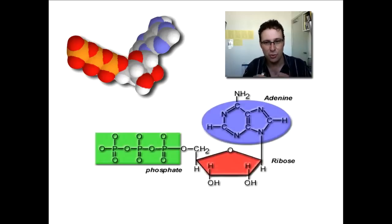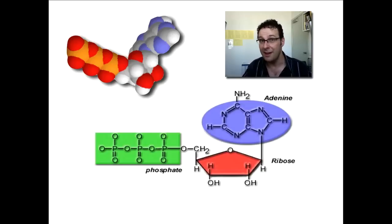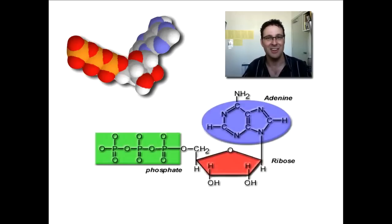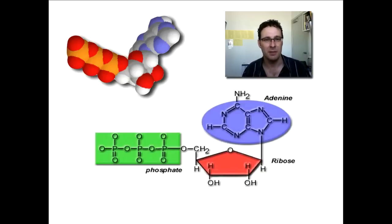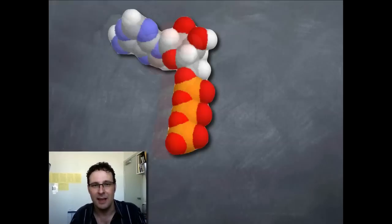Also, the sugar in ATP is ribose, just like in messenger RNA. If you think about a nucleotide, each one has a sugar, a phosphate, and a nitrogen-containing base. Look at ATP — it has a sugar, a triphosphate, and a nitrogen-containing base, because ATP is a nucleotide. A lot of people don't realise that. Usually we draw it as a molecular model, and let's have a closer look at ATP like that.